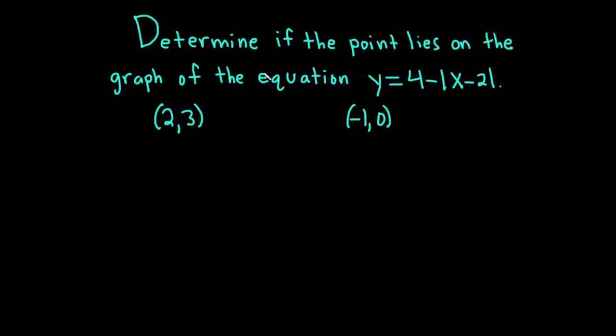In this video, we're going to determine if the point lies on the graph of the equation y equals 4 minus the absolute value of x minus 2. And we have two examples. Our first point is the ordered pair (2,3) and our second point is the ordered pair (-1,0).